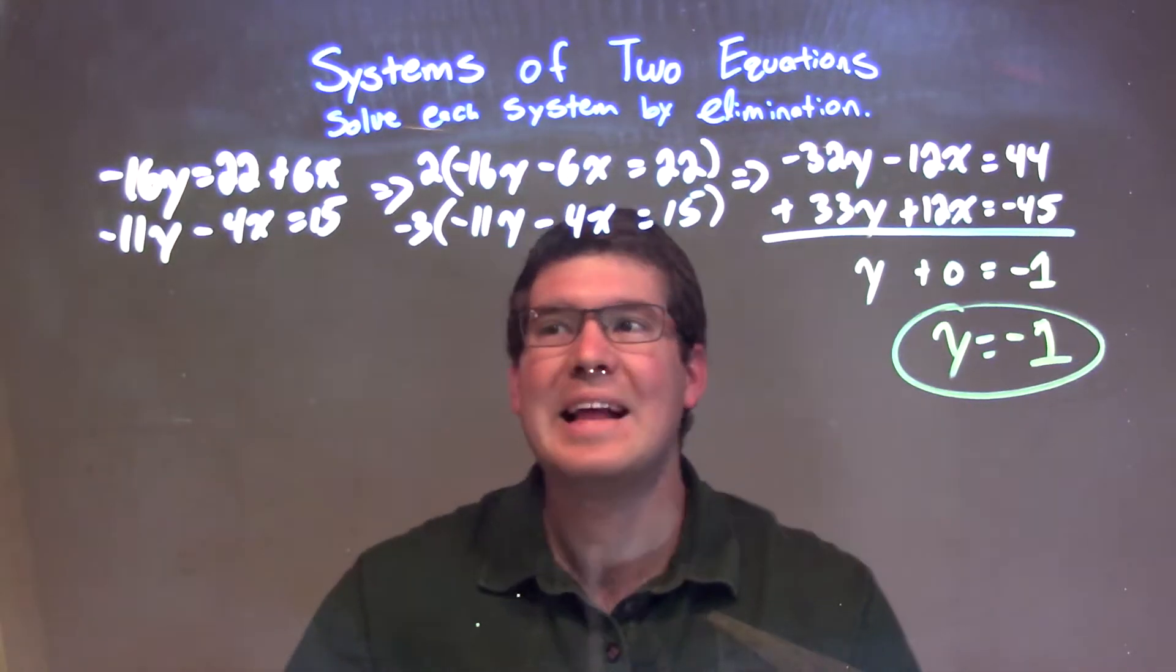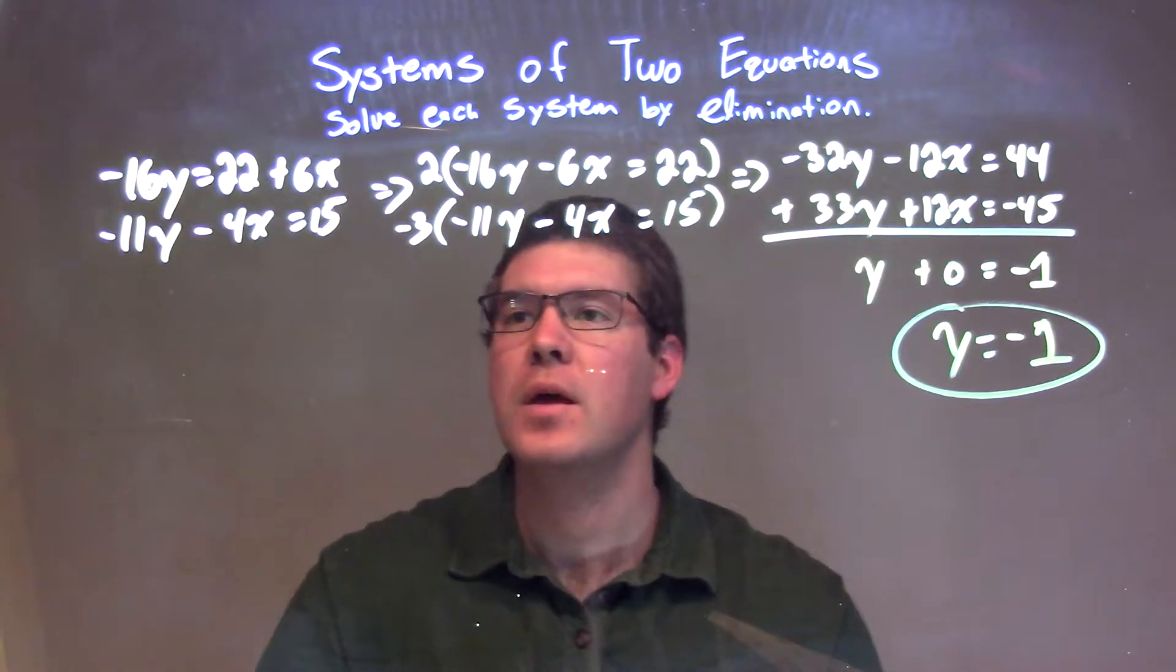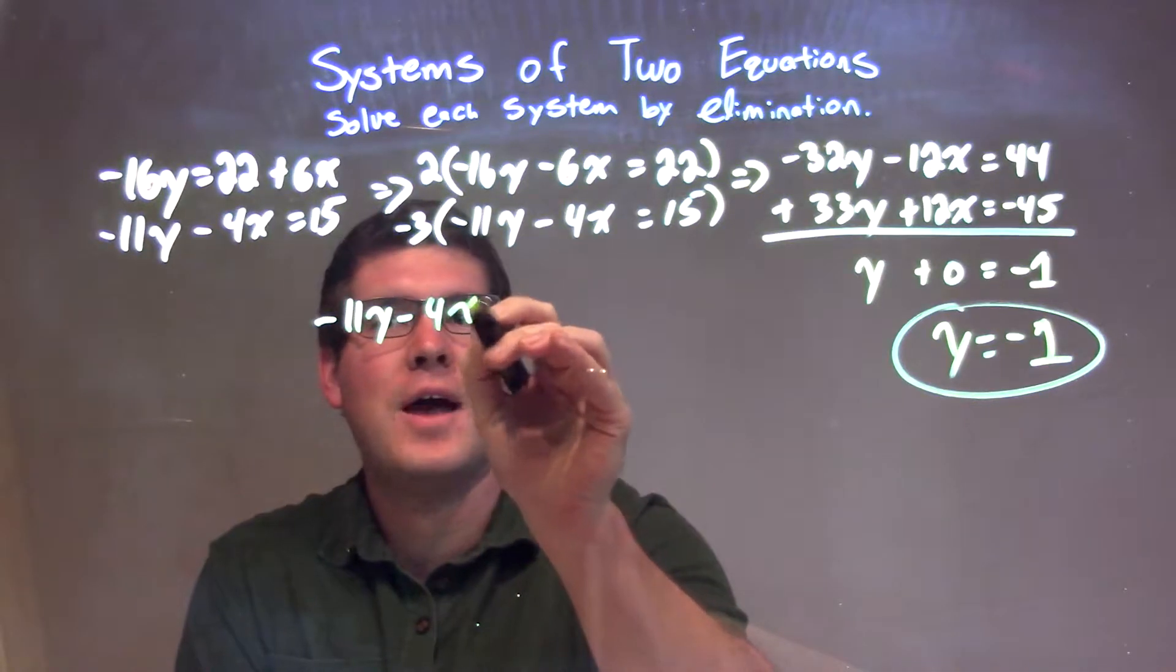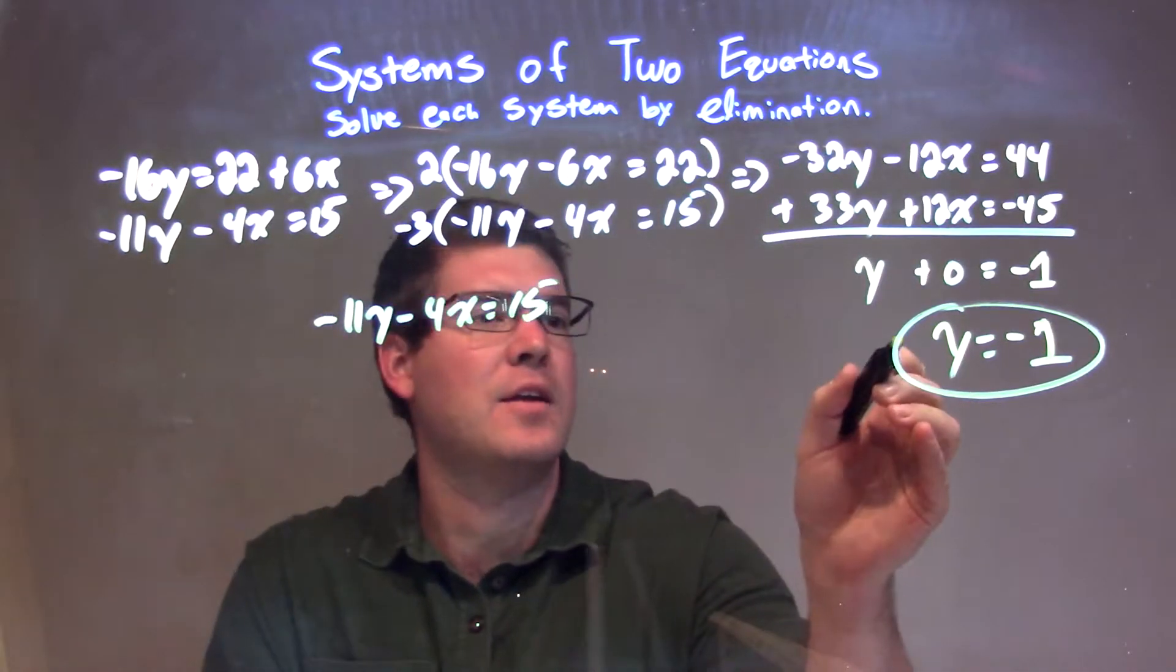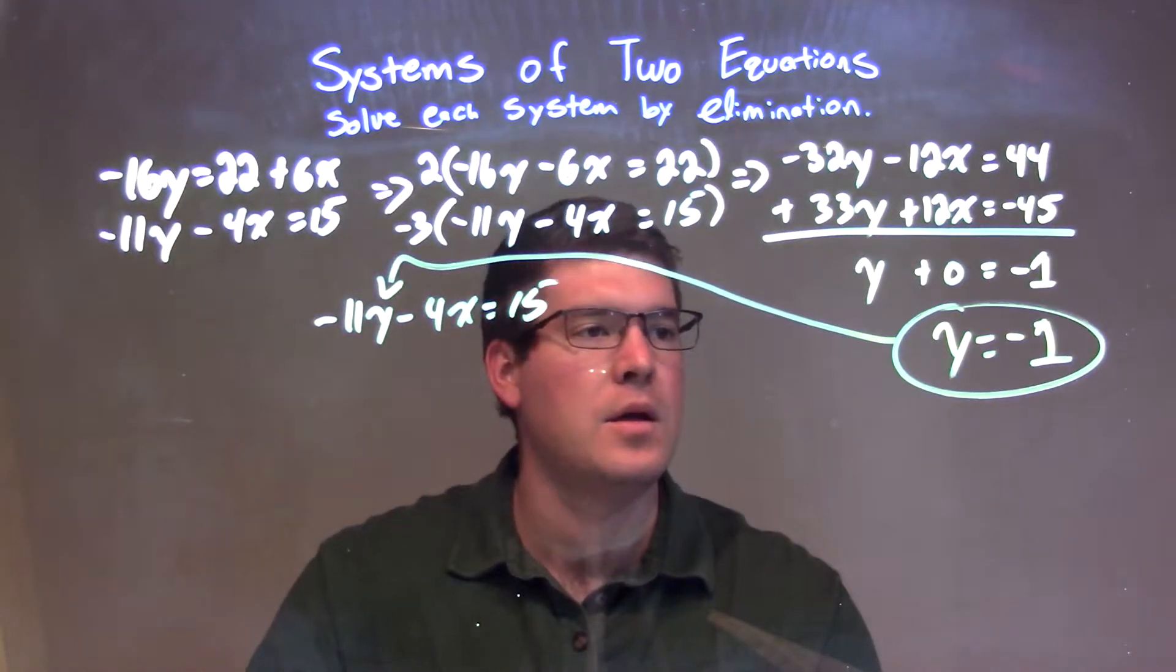So now what we're going to do is plug that into one of our other equations and simplify. So let's pick the second equation: negative 11y minus 4x equals 15. And again, it doesn't matter which equation we choose. I just chose the second one.